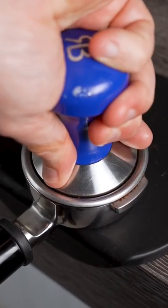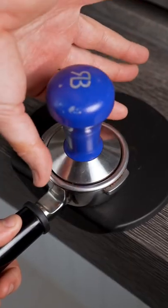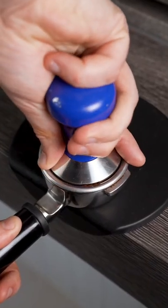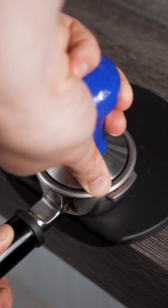Tamp down firmly until you feel the grounds aren't moving down anymore. Then take your fingers and place them on the edge of the basket, and move them in a slight circle. You'll be able to feel if the tamp is level with the rim of the basket.